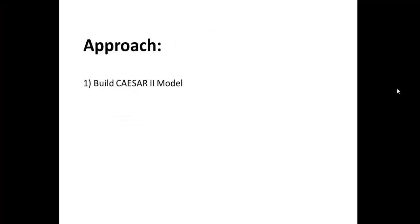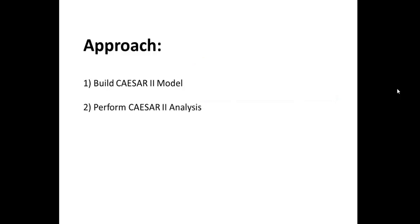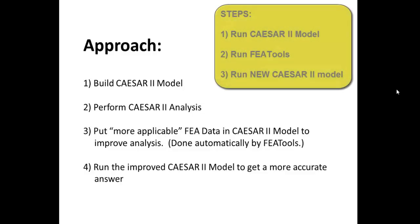Let's review the approach that we just went through. First, we built a standard CSER model the way we always would — this can include importing the model wholly from CADworks. Next we performed the standard CSER analysis. Then we asked FEA Tools to perform an FEA calculation on all the tees and insert the more applicable CIF and flexibilities into a new version of the CSER piping model. Then lastly, we ran the new version of the CSER piping model to get a more applicable analysis. In this case, we saw that the actual stresses were well below the allowable.